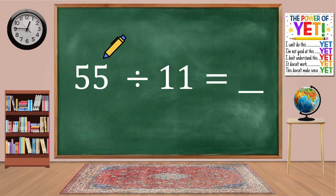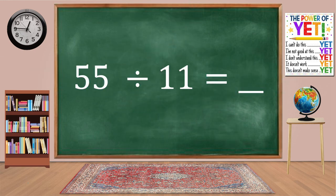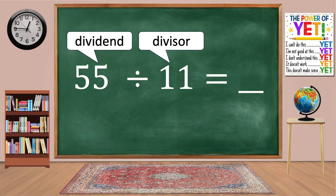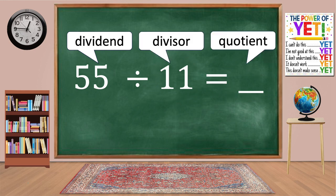55 divided by 11 equals blank. Let's see what the numbers in a division sentence are called. The number being divided is the dividend. The number that's divided into the dividend is the divisor, and the answer is the quotient.